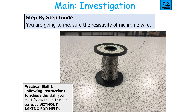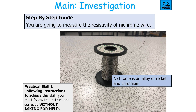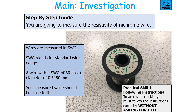In this investigation you are going to measure the resistivity of nichrome wire. Nichrome is an alloy of nickel and chromium and you can carry out this investigation for either a pure metal or an alloy. Wires are measured in something called SWG — standard wire gauge. A wire of SWG30 has a diameter of 0.3150 millimetres, so you can see roughly where your measured diameter values should lie.